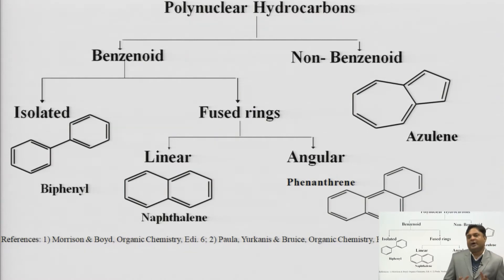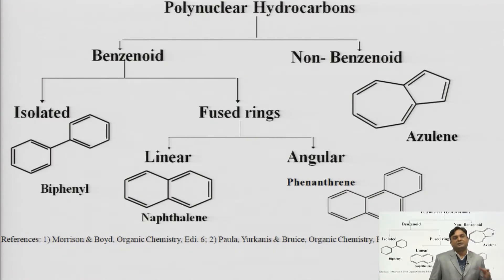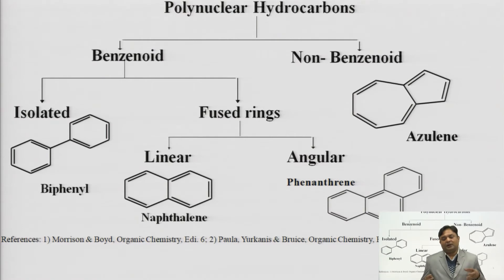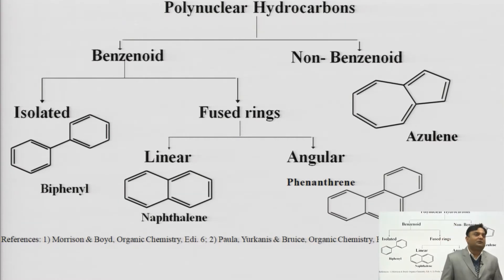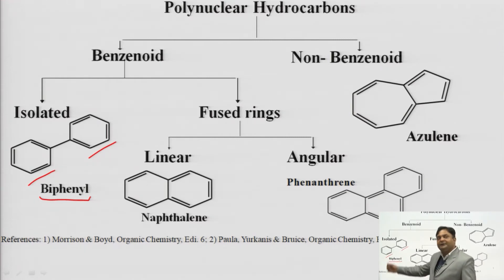These benzenoid compounds can be grouped into various categories. One group is isolated benzenoid compounds. Isolated means the rings are separated - they are not fused together; they are joined together by a bond, but they are not fused together. The examples include biphenyl, which has two benzene rings joined together by a bond.